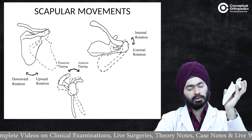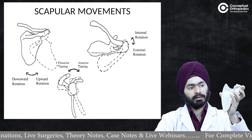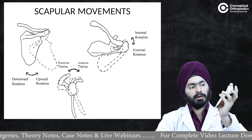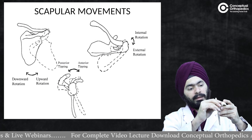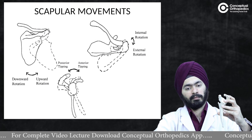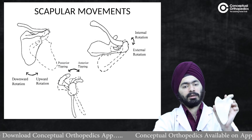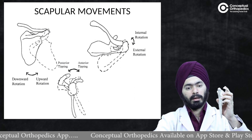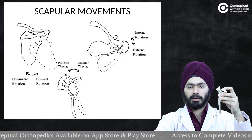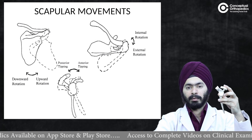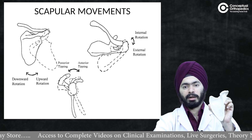The scapula can also undergo upward rotation or downward rotation — you can see the acromion and clavicle going laterally down for downward rotation and up for upward rotation. The third movement is protraction or internal rotation, and retraction or external rotation. To summarize: anterior tilt, posterior tilt, upward rotation, downward rotation, protraction, and retraction are the three pairs of scapular movements.